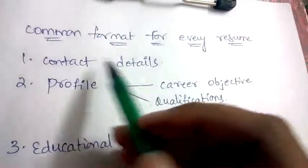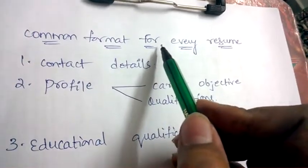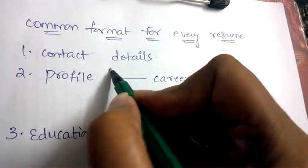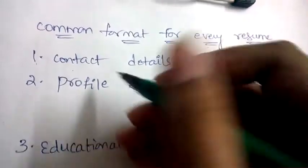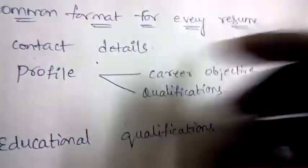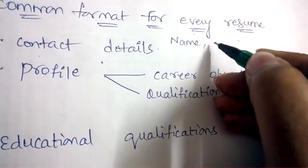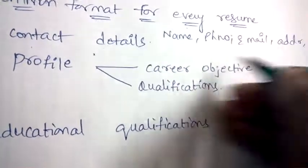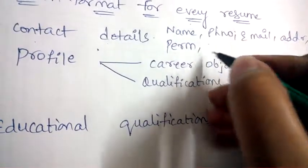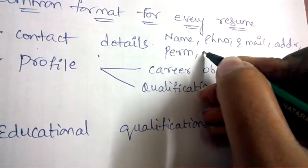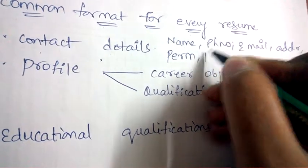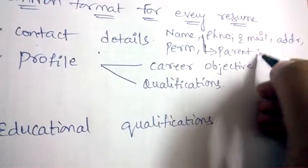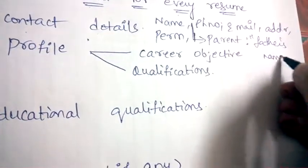Hello friends, welcome back to Best Way to Study. In this video I'm going to give you the common format which is to be followed by every resume. First, in the resume you need to mention contact details — your personal details such as your name, phone number, email address, residential address, permanent address, and optionally your father's name. Parent details are optional, but it's better to mention the father's name as it looks professional.